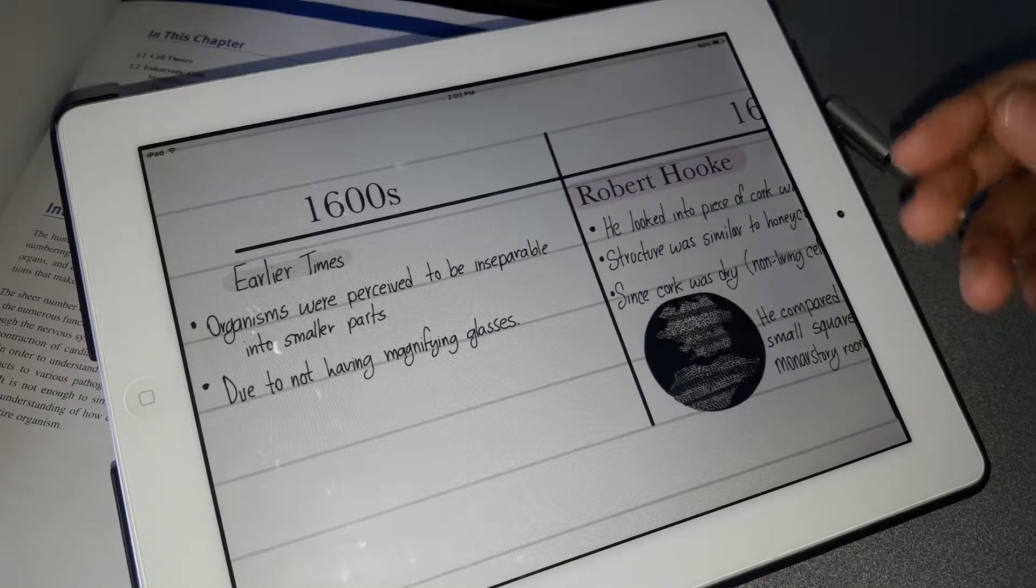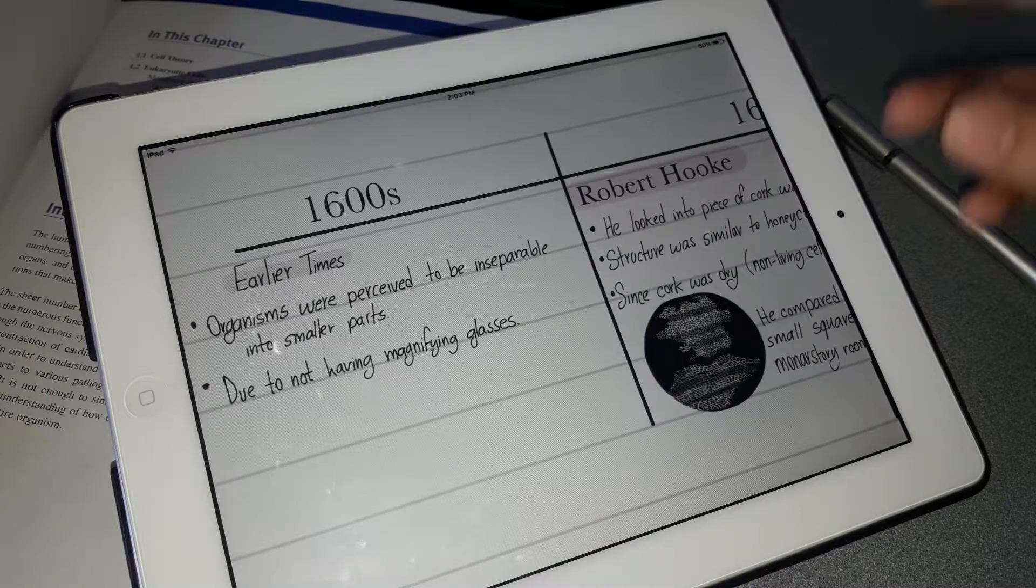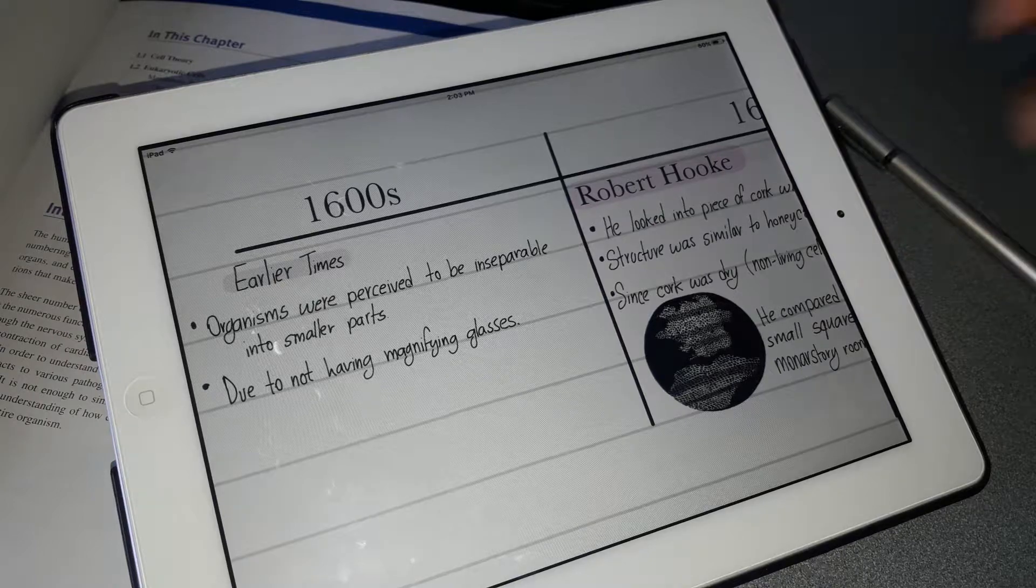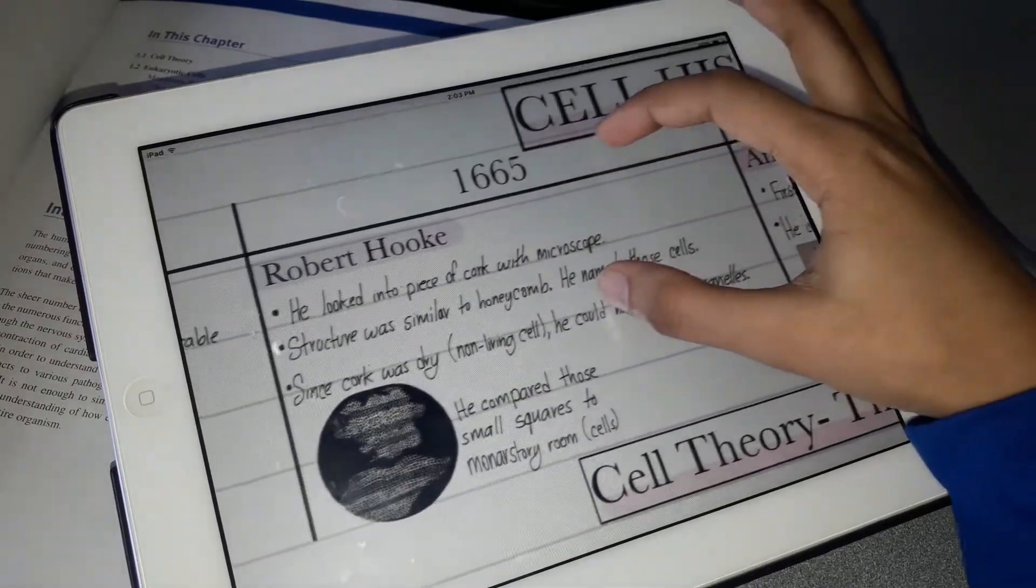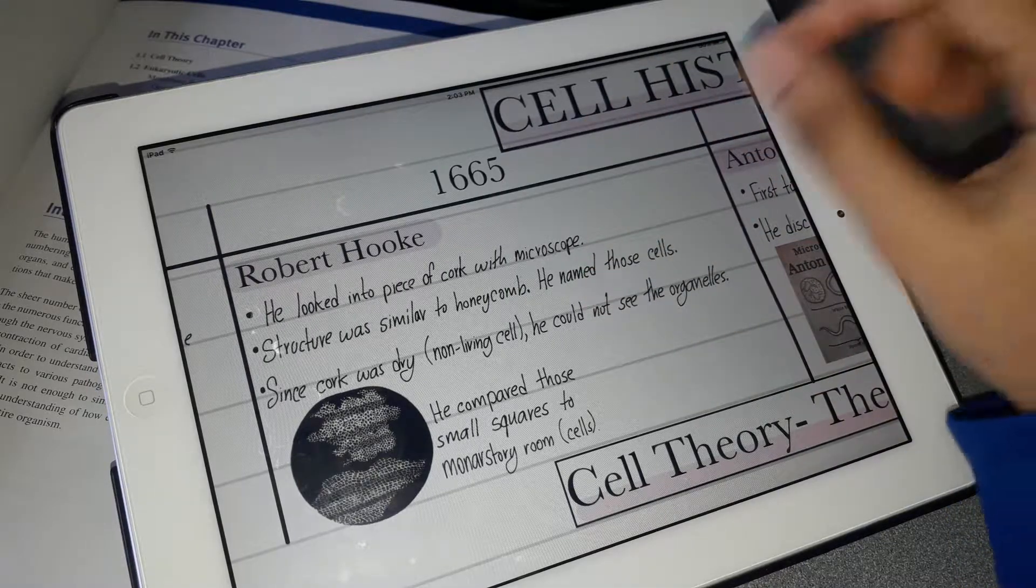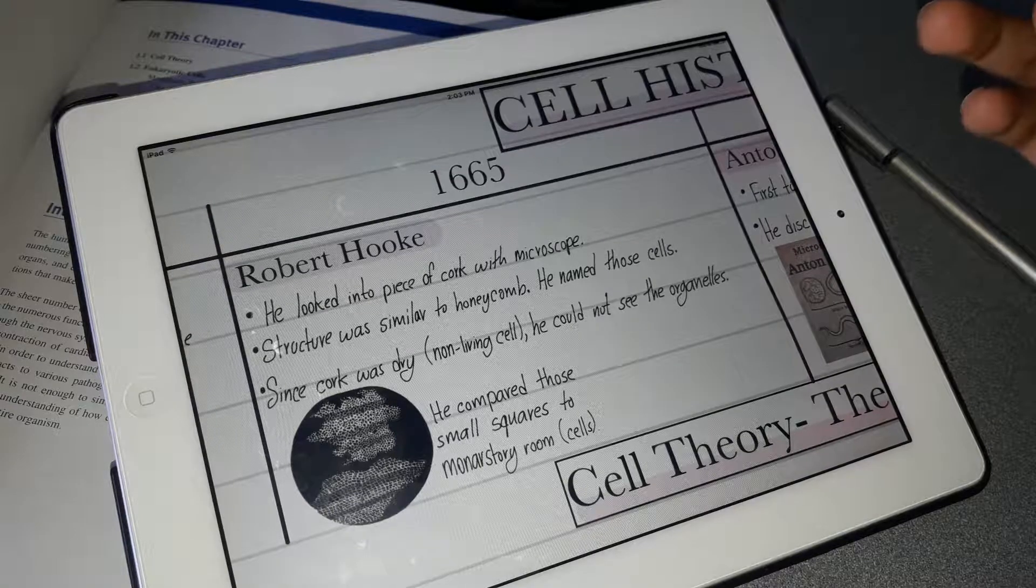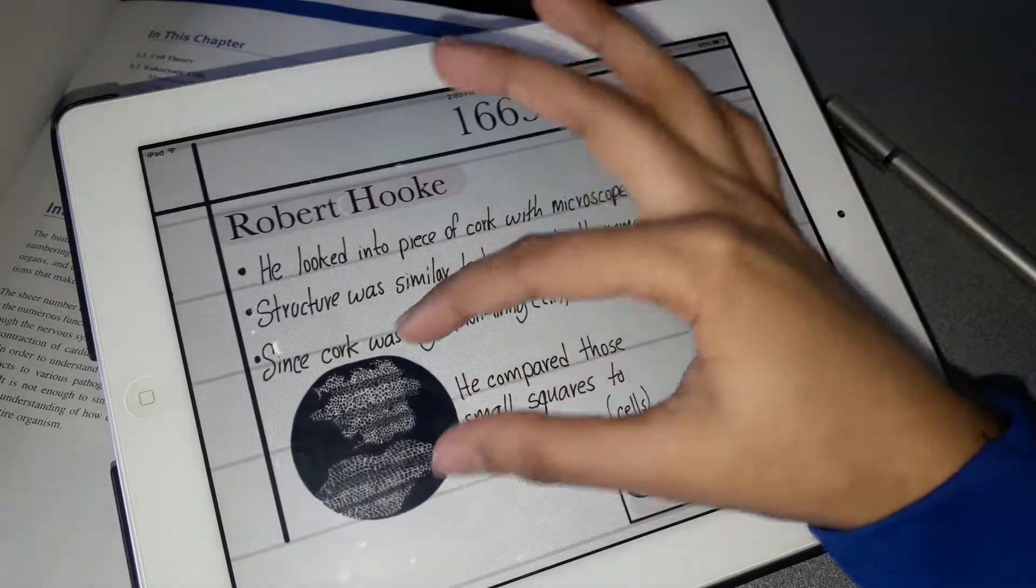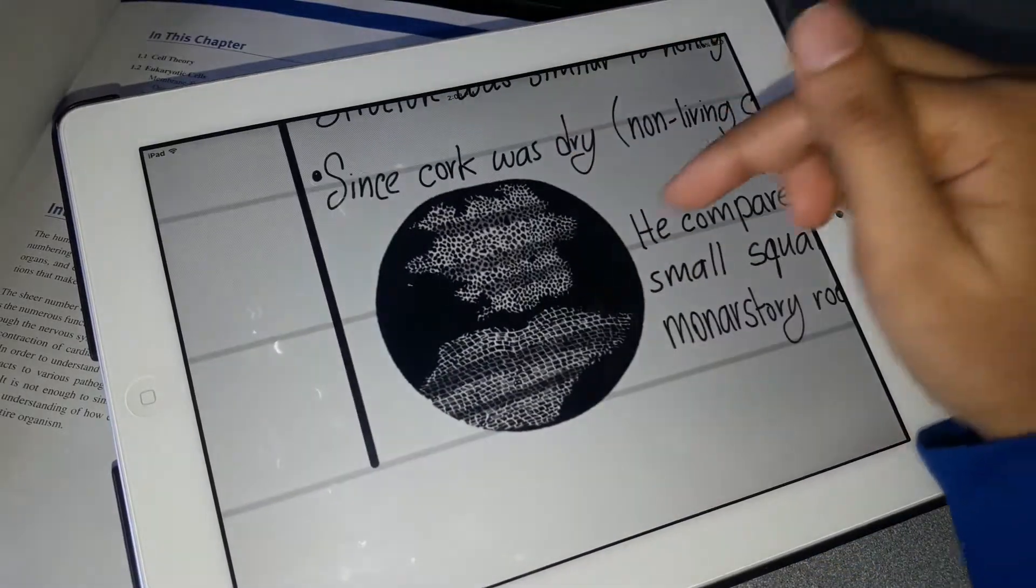Next, it moves on to the discovery of Robert Hooke in 1665. He looked at a piece of cork - dead cork - with a microscope. What he saw were these small square-like pieces, and he compared those with the small monastery rooms which were called cells.